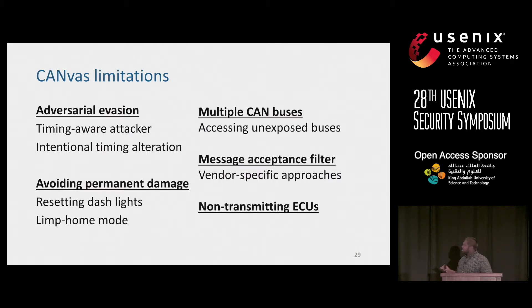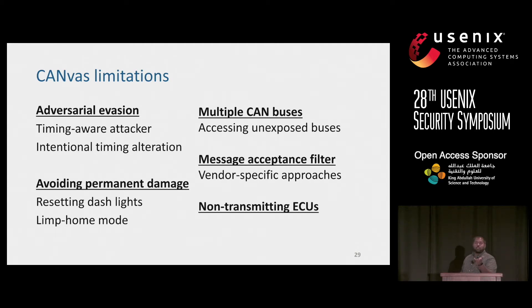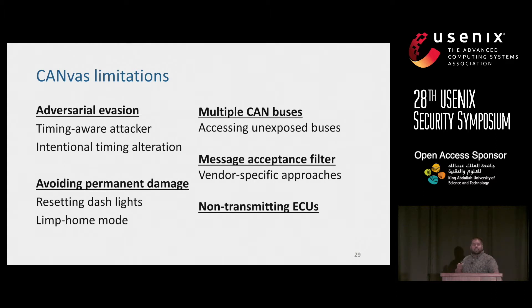A few limitations: first, adversarial evasion. An attacker — or even the automaker — could thwart our mapping. In that case, we would rather use an intrusion detection system; CANVAS targets passive attacks. People have also asked why the automaker doesn't intentionally alter timing to defeat our mechanism. Well, scheduling messages in real time is already a challenging enough problem, so they have no incentive to alter timing.